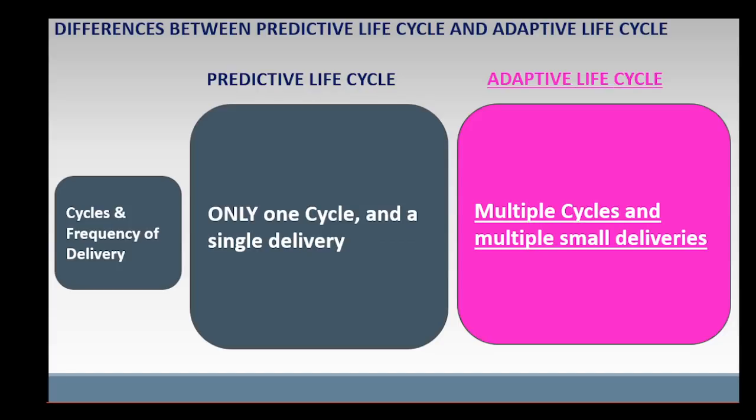In adaptive life cycle, there are multiple cycles and multiple small deliveries, one delivery in each cycle. The project is divided into smaller cycles, usually between one to four weeks. In each cycle, up to the last cycle, an increment or a small section of the product is created and could be delivered to the customer. The customer could start using an increment that has been delivered.